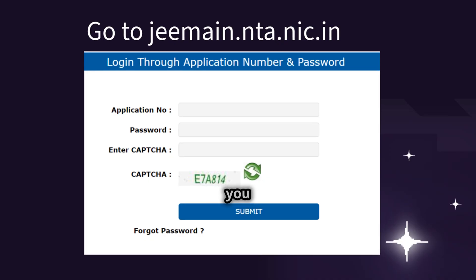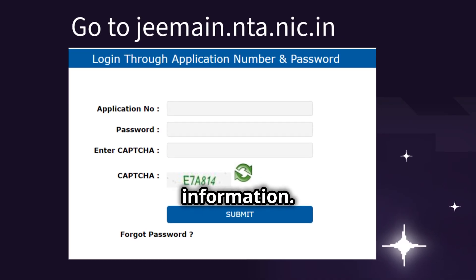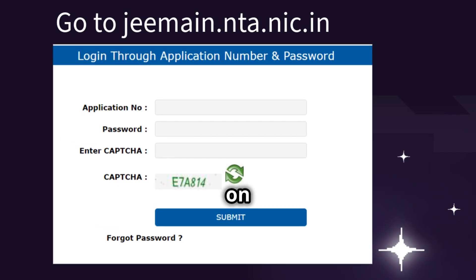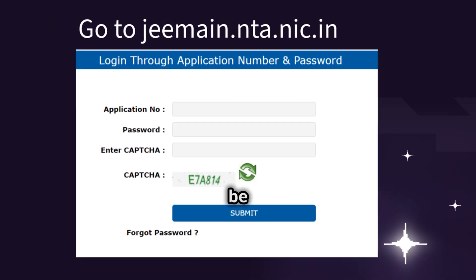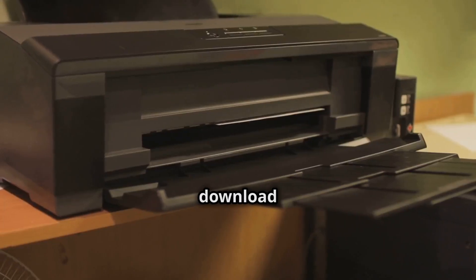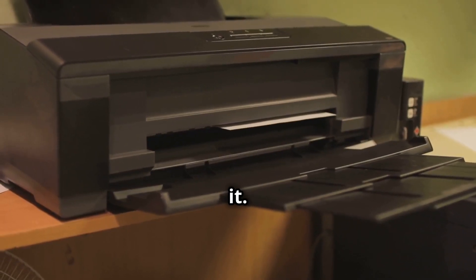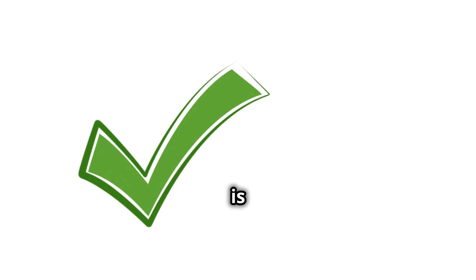Make sure you enter the correct information. After entering these details, click on Submit. Your admit card will be displayed on the screen. Make sure to download and print it. Double-check all the details to ensure everything is correct.